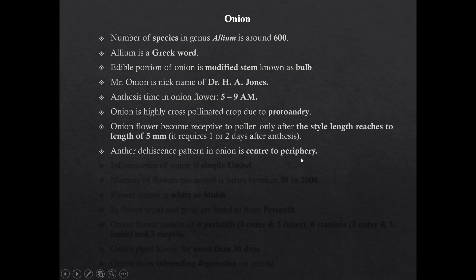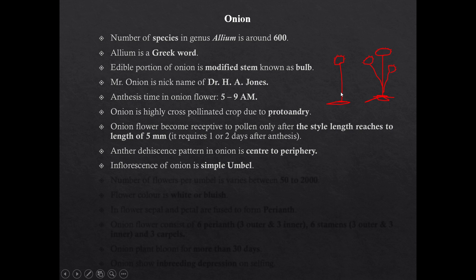Anther dehiscence pattern in onion is from center to periphery. But in case of carrot, the anther dehiscence pattern is from periphery to center, which is known as centripetal dehiscence. Inflorescence of onion is simple umbel. Simple umbel means the umbel branch is having only one umbel — there is no secondary or tertiary umbel. In carrot, the umbel type is compound umbel and it consists of primary, secondary and tertiary umbels.